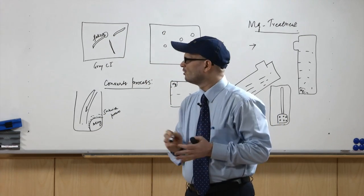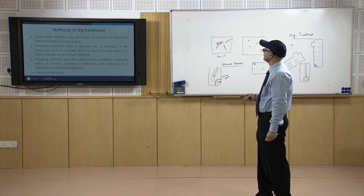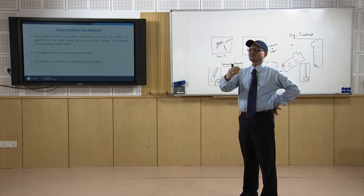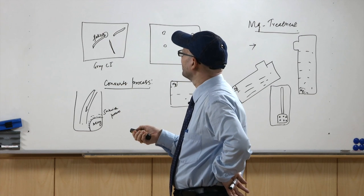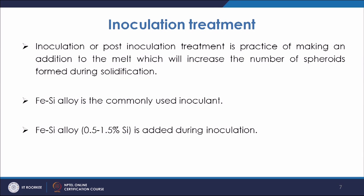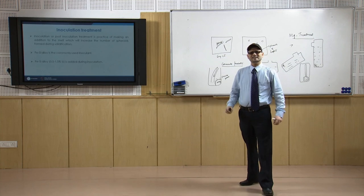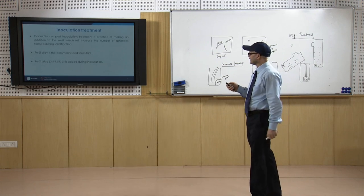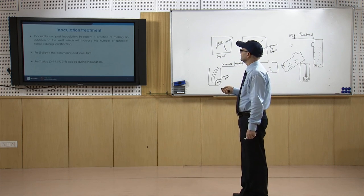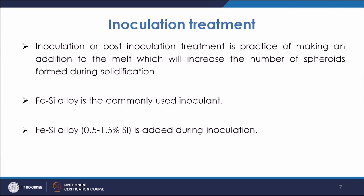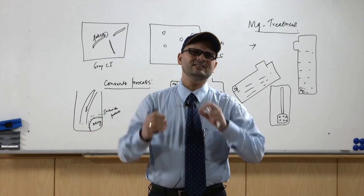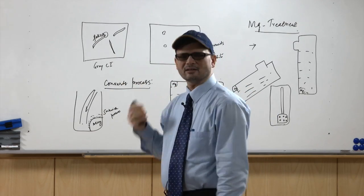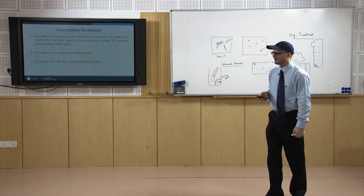These are the methods of making ductile iron using magnesium treatment. As in grey cast iron, inoculation treatment is also applied here, which increases the number of spheroids formed during solidification. Ferrosilicon alloy is the commonly used inoculant; 0.5 to 1.5% silicon is added during inoculation, increasing the number of spheroids in the ductile iron.